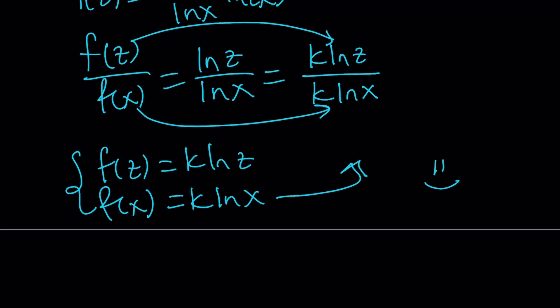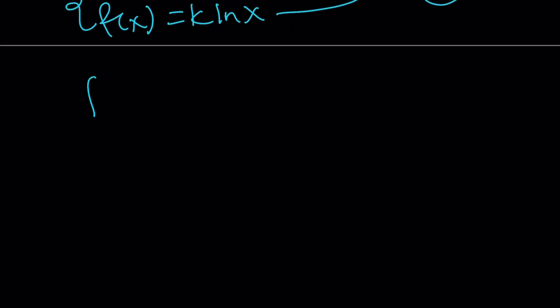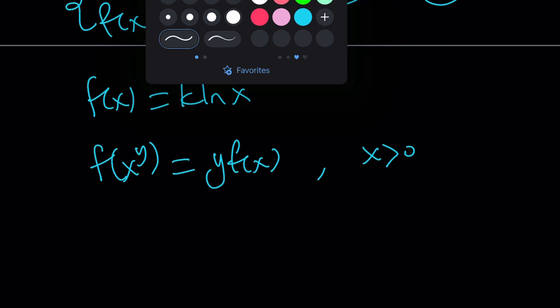Now, let's go ahead and do the following. We got f of x equals k ln x for the solution to this problem. f of x to the y equals y times f of x. And x is positive and f is continuous. So let's go ahead and plug it in to check our work.